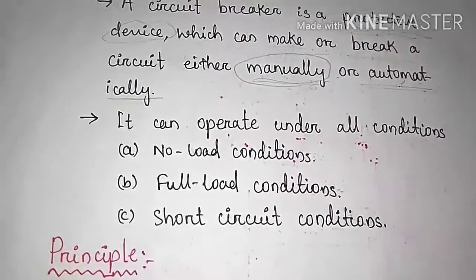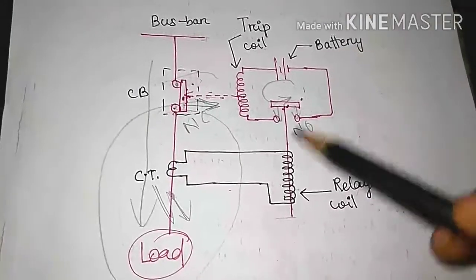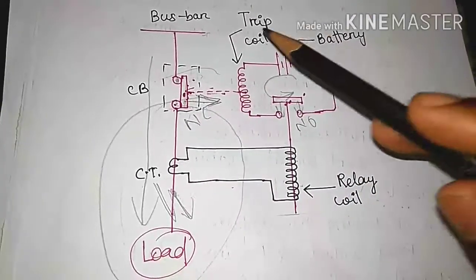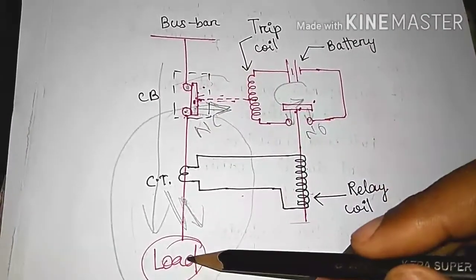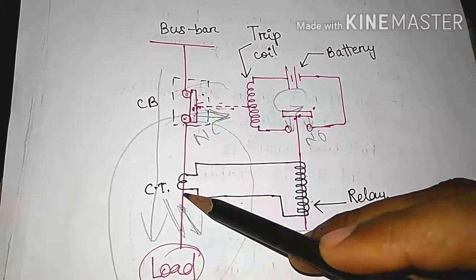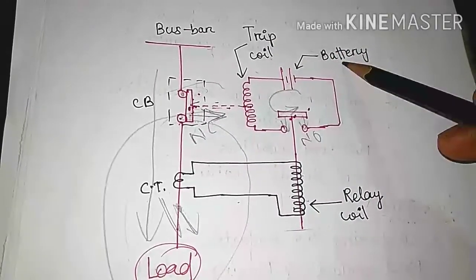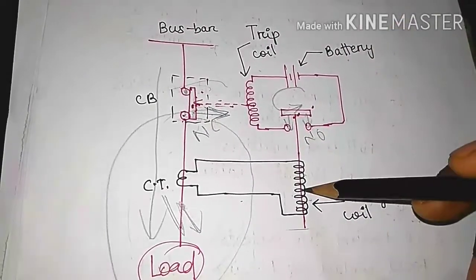Then goes to principle. Here, this is the diagram of a circuit breaker. Circuit breaker is connected between the bus bar and load. This is the current transformer. This is tripping coil. This is battery. This is relay coil.